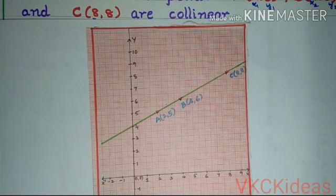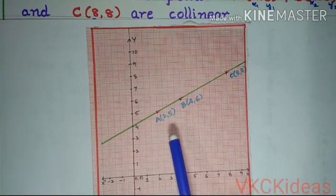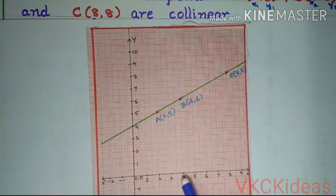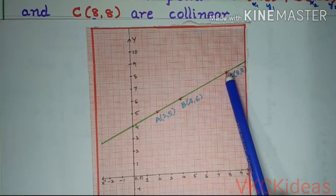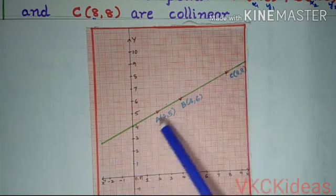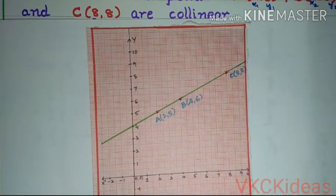This can also be proved by plotting these points on the graph: A(2,5), B(4,6), C(8,8). They make a straight line and hence they are collinear.